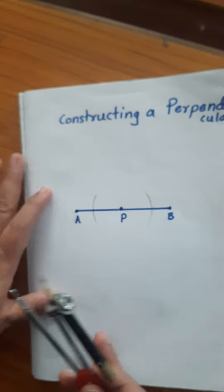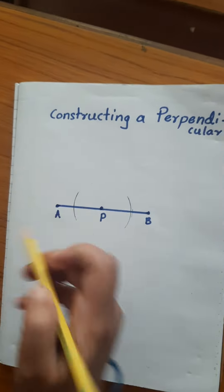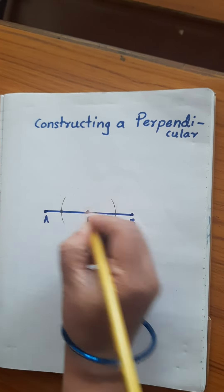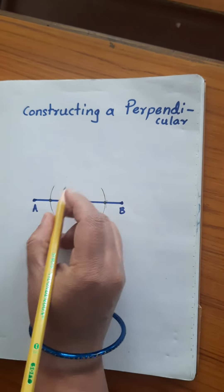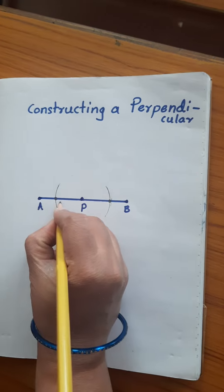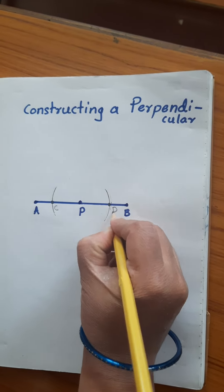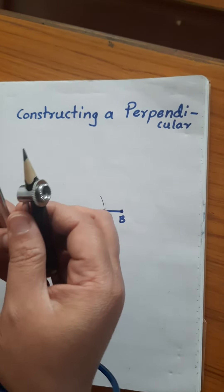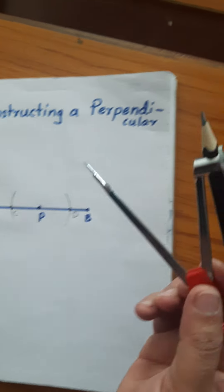Once two arcs are cutting the line, mark the points as C and D.